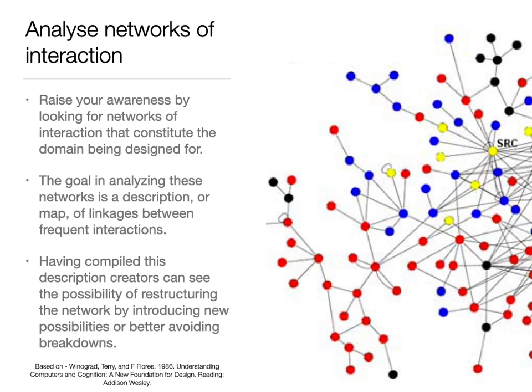One method of looking for the impacts of our creative projects is to look at the networks of relationships they involve. Mapping such networks of influence was advocated by Bruno Latour in the actor network theory. These networks can influence the materials used in making projects, the supply chain for goods and services employed, the context of potential application and the impact of the work on them, and the life cycle of the things you make and how they will be discarded in the future. With this information to hand, creators can see the possibilities of restructuring the network by introducing new possibilities or better avoiding breakdowns.